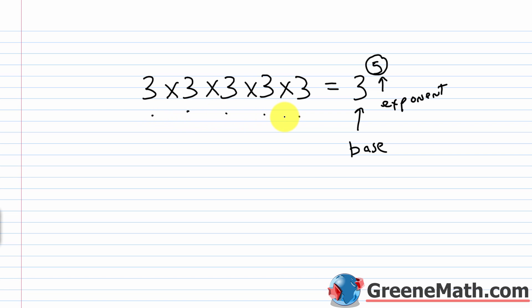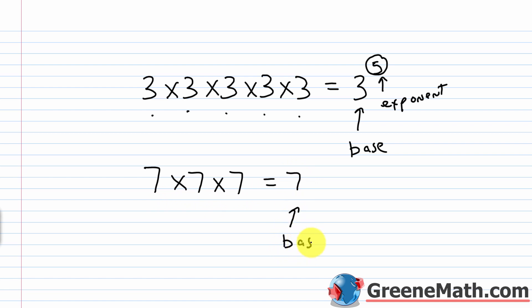For another example, if we had 7 times 7 times 7, the number being multiplied by itself is 7 — that's the base. I have 1, 2, 3 factors of 7, so my exponent is 3. At this point, we've only worked with a base that's positive. What we're going to think about today is what happens when we have a negative base.